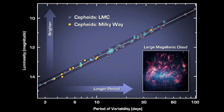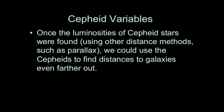Here is a graph showing the period-luminosity relationship for Cepheid variables: the longer the period of pulsation, the brighter the luminosity. This graph shows data for Cepheids measured within both the Milky Way and the Large Magellanic Cloud. Cepheid variables have also been used to determine distances to even farther galaxies, allowing us to find distances to galaxies beyond the Milky Way and its satellites.